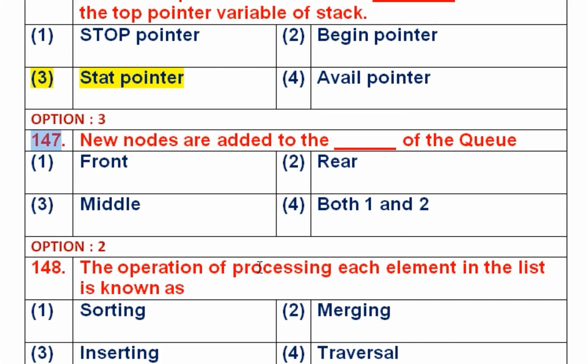Question number 147: New nodes are added to which end of the queue? In a queue data structure, data is added from one end and removed from another. The end from which data is added is called the rear end, and the end from which data is removed is the front end. So option 2, the rear end, is the right answer.